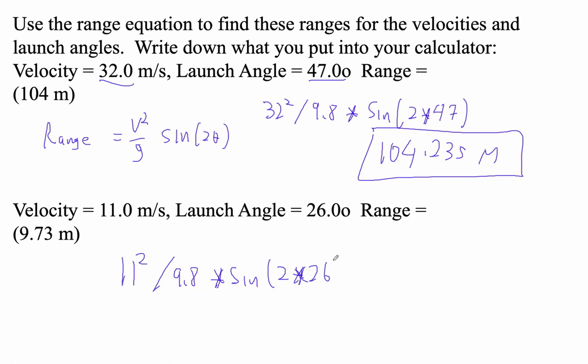Literally type this into your calculator. So 11 squared divided by 9.8 times sine of two times, what's our angle, 26? This won't be as far. 9.729.